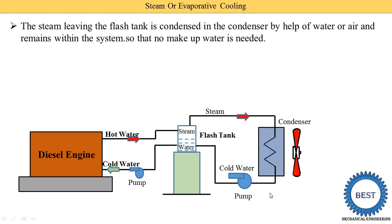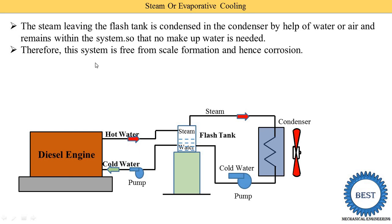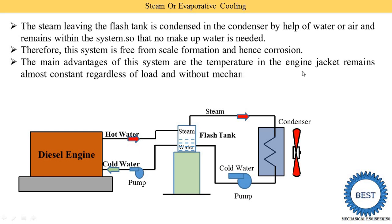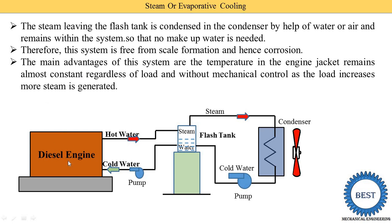Since the condenser is totally closed, we do not need to add makeup water, which means there is no scale formation and no corrosion problem in this system. The main advantage is that the temperature in the engine jackets remains almost constant, providing uniform cooling regardless of load. As load increases, more steam is generated; if load decreases, less steam is generated — so no mechanism is required to control the mass flow rate.